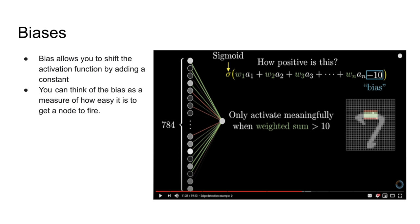Now, biases. Biases is a random number assigned by the computer scientist in order to calculate which neurons will actually get activated and fire. Biases allow you to shift the activation function by adding a constant. You can think of the bias as a measure of how easy it is to get a node to fire.